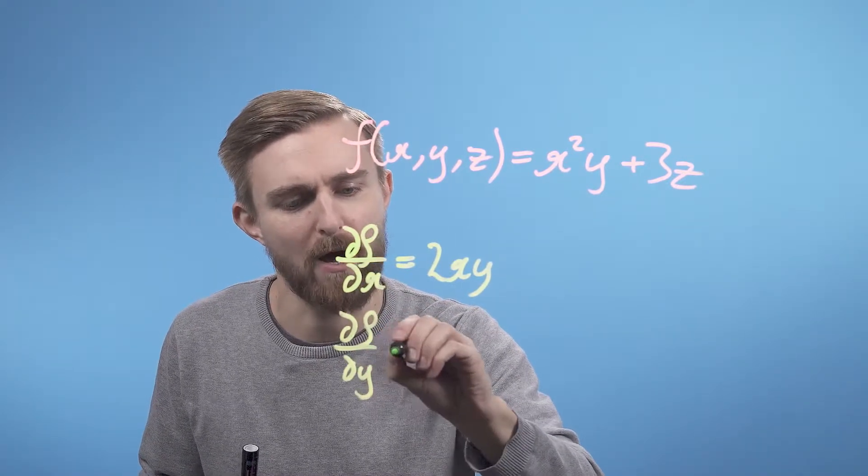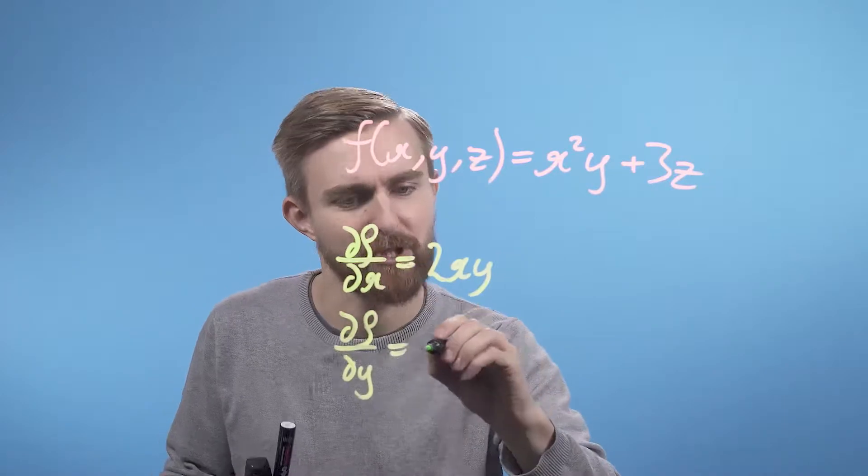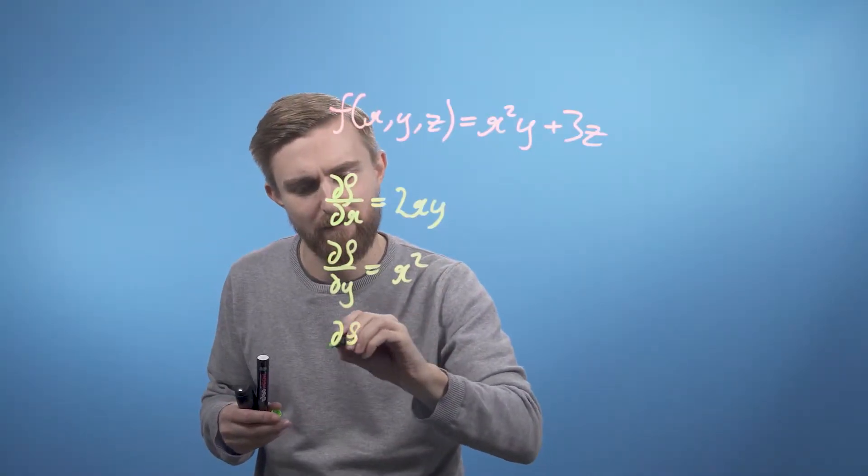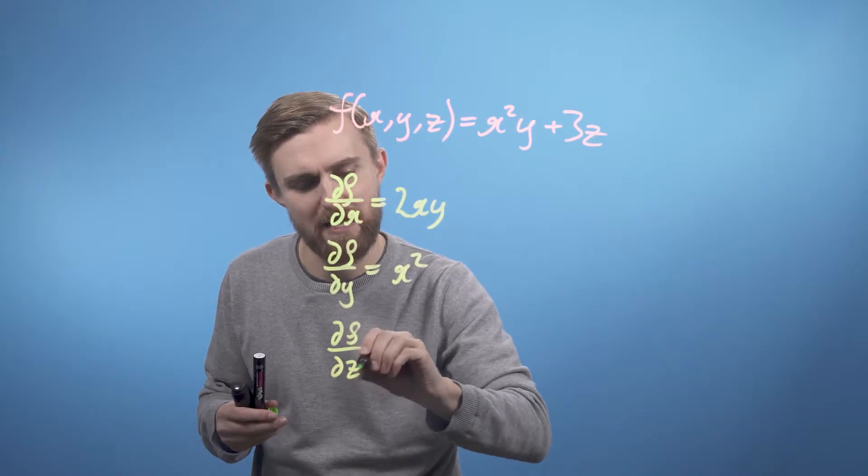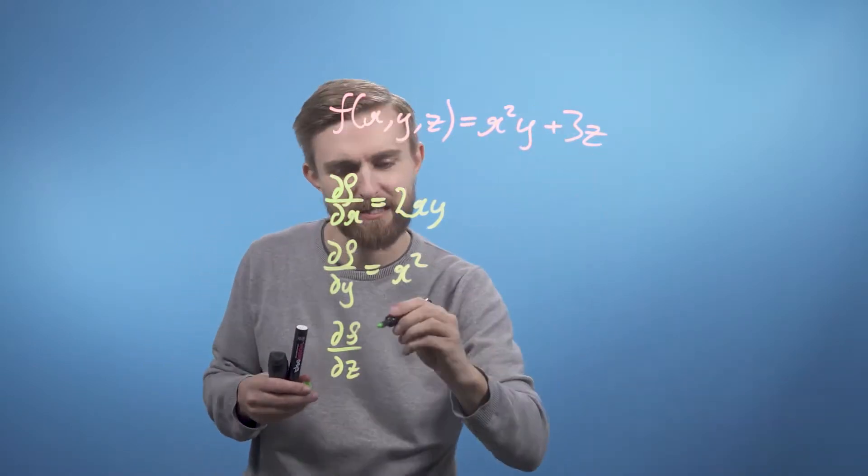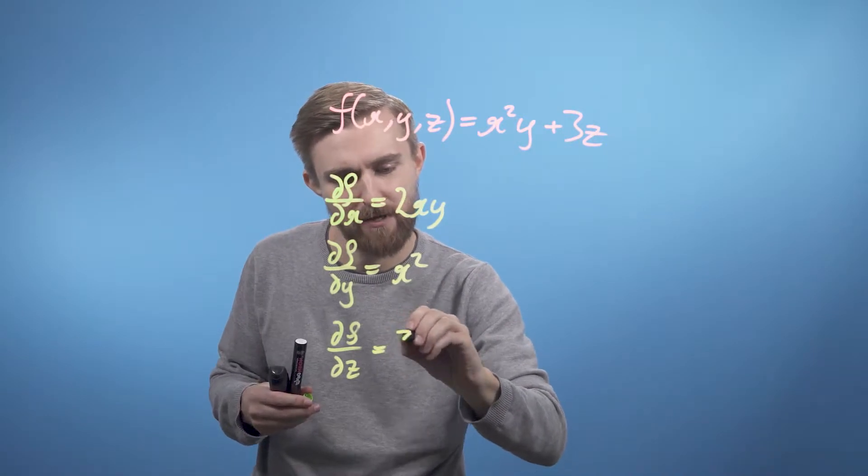df/dy is going to equal just x², and df/dz is just going to be, this thing's just a constant and the z disappears, so we just get the number 3.